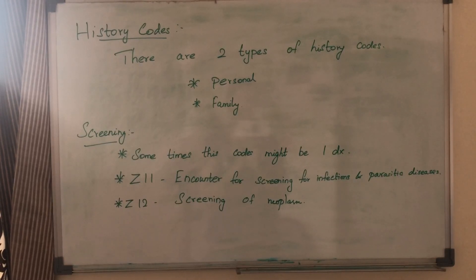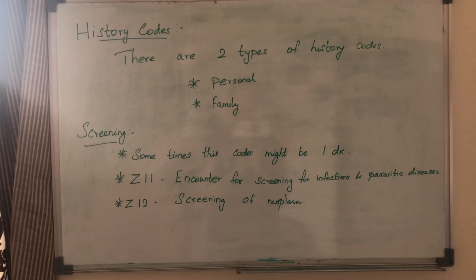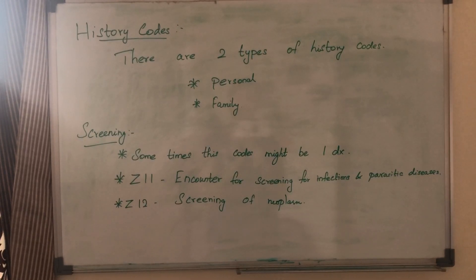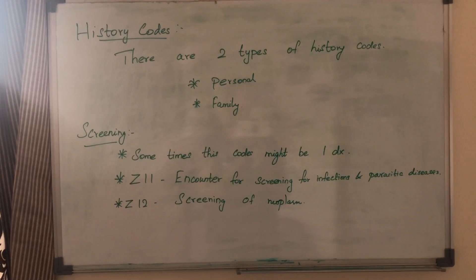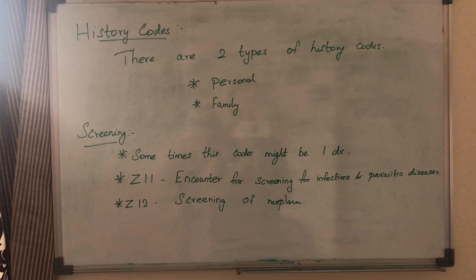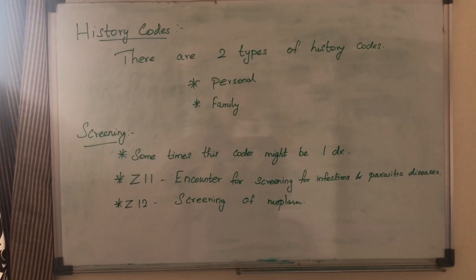Another type of code is the screening code. Sometimes one condition is identified as the principal diagnosis, and screening codes are available. For example, Z11 is the screening code for infections and parasitic diseases, and Z12 is the screening code for neoplasm. We can use Z12 category codes for neoplasm screening.